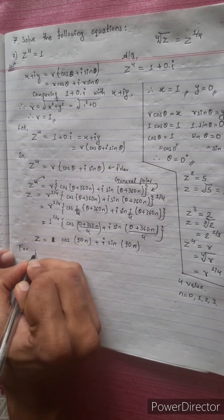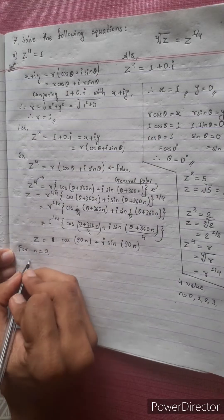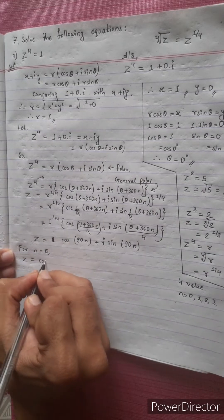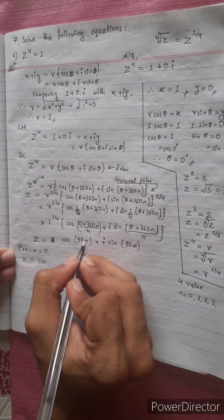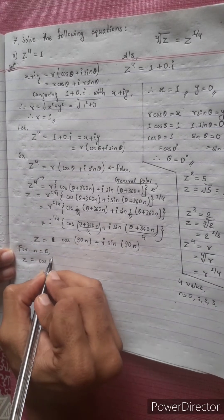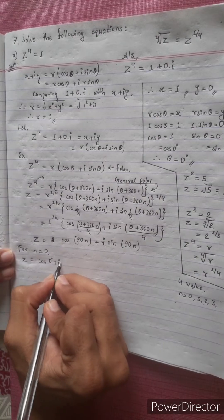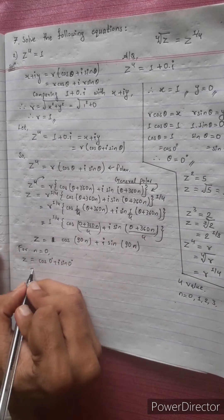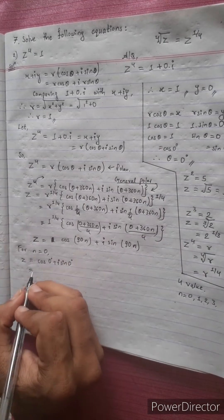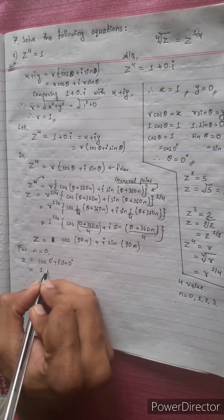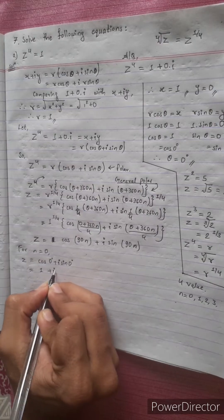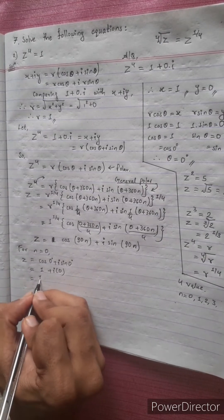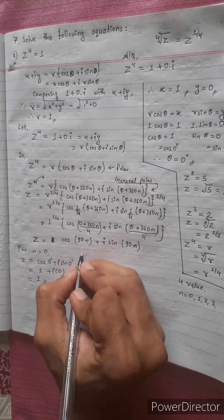When n equals 0: z equals cos(0 times 90) plus i sin(0 times 90), that is cos 0 plus i sin 0, which equals 1 plus i times 0, so z equals 1.